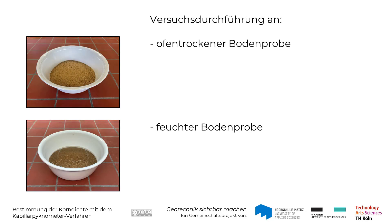Für den Versuch darf sowohl eine ofengetrocknete als auch eine feuchte Bodenprobe verwendet werden. In diesem Lehrfilm wird nur die Versuchsdurchführung an der trockenen Probe erläutert, die in der Norm als Verfahren A benannt ist. Für die Ermittlung der Korndichte an einer feuchten Probe wird auf Verfahren B in der Norm verwiesen.